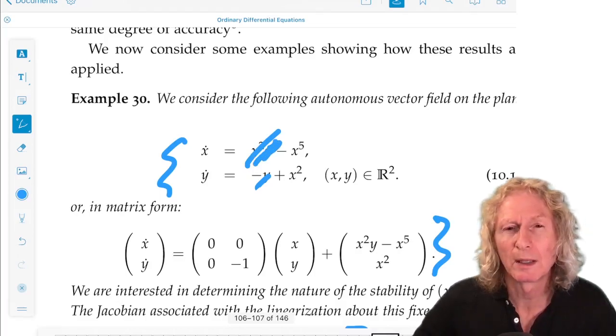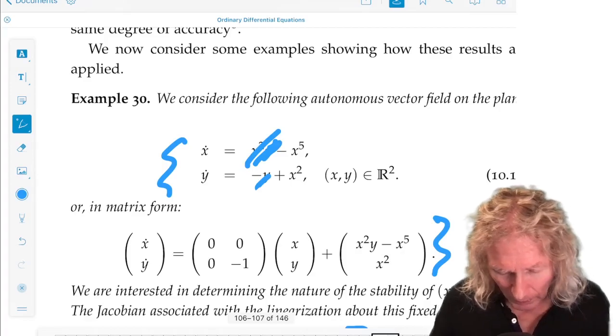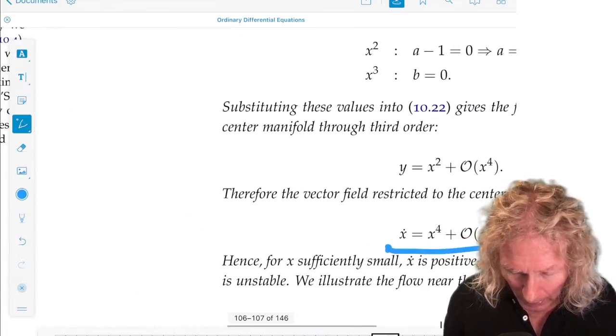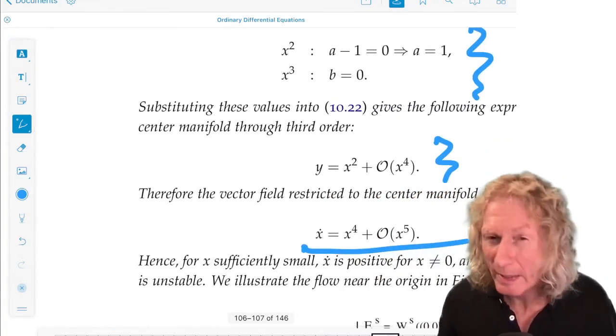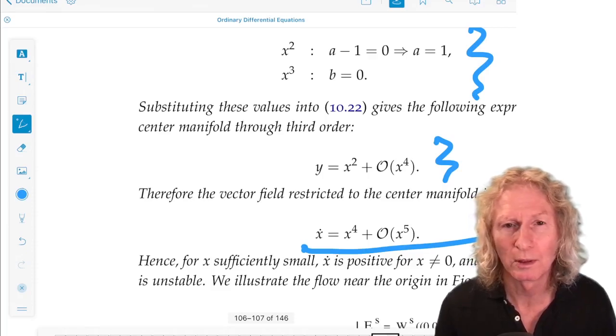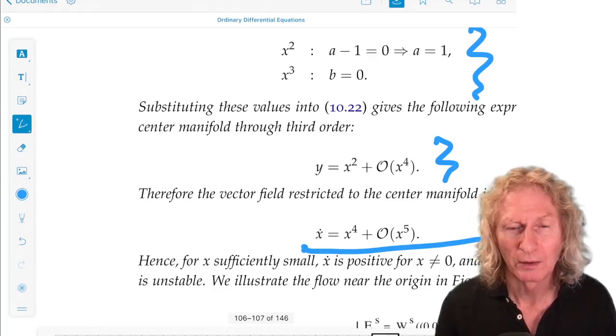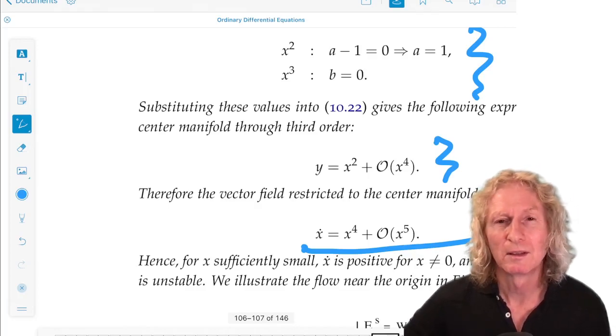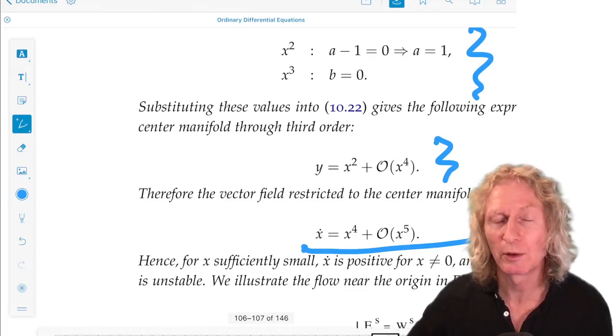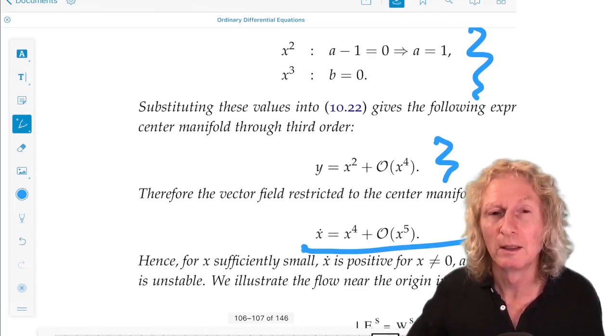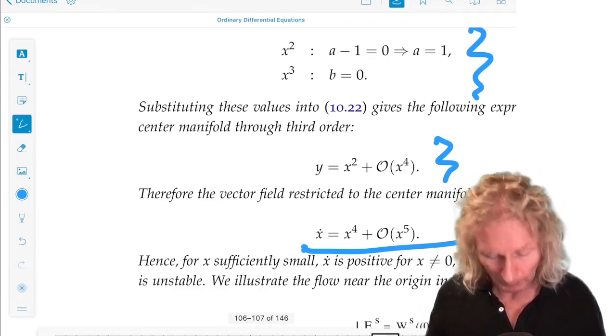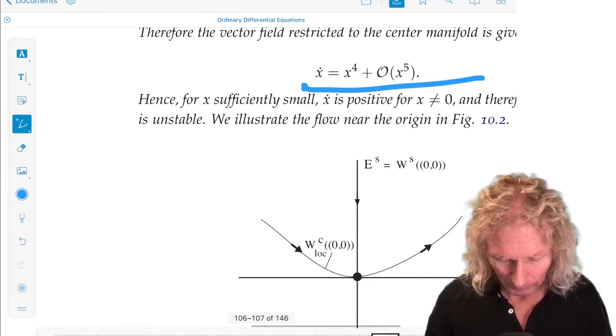And that is not the same as x to the 4th, and we get a different answer for stability. So, I've said that in a rather clumsy way, but the curvature of the center manifold is important. We can't just approximate it by the tangent plane to the center manifold, or the center subspace. We need those nonlinear terms. All right, one more example.